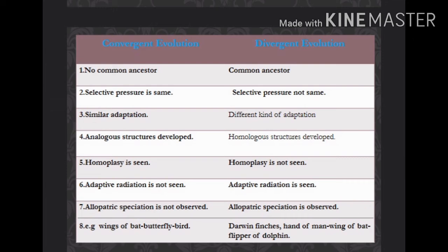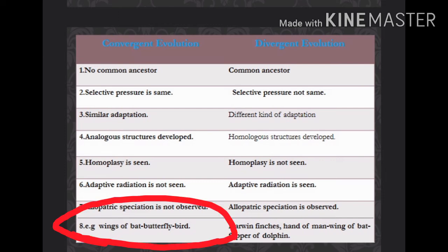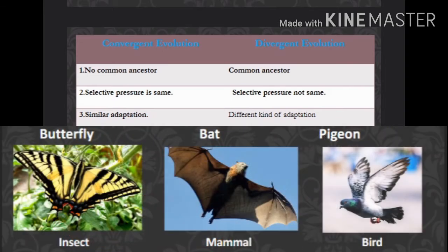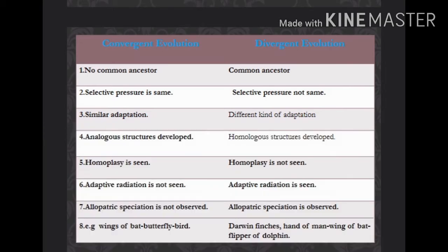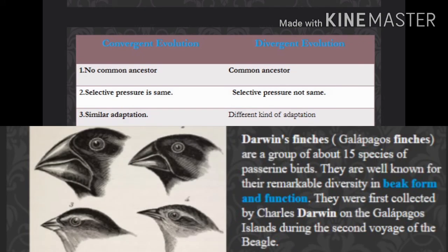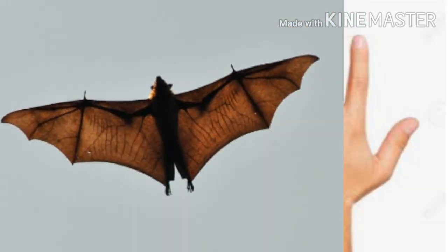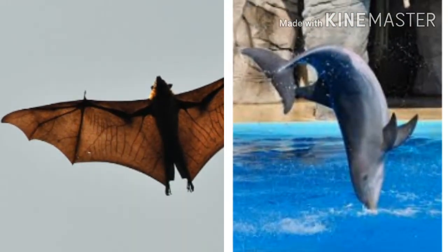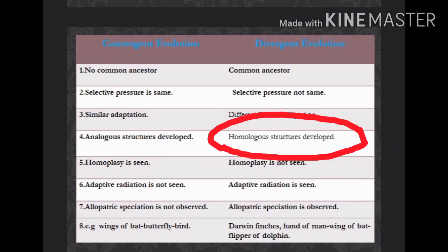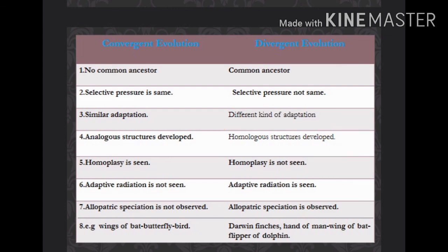Now for examples: in convergent evolution, the wing of a bat, butterfly, and bird are classic examples, showing analogous structures. In divergent evolution, examples include Darwin's finches showing adaptive radiation, and the hand of man, wing of bat, and flipper of dolphin — all showing homologous structures.